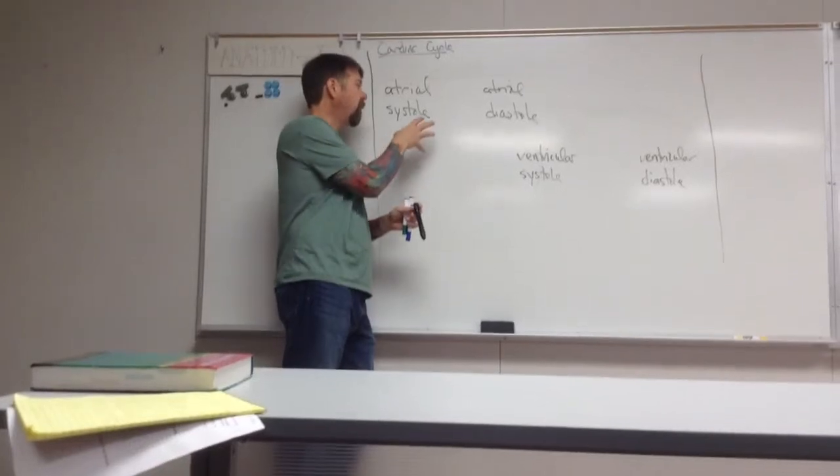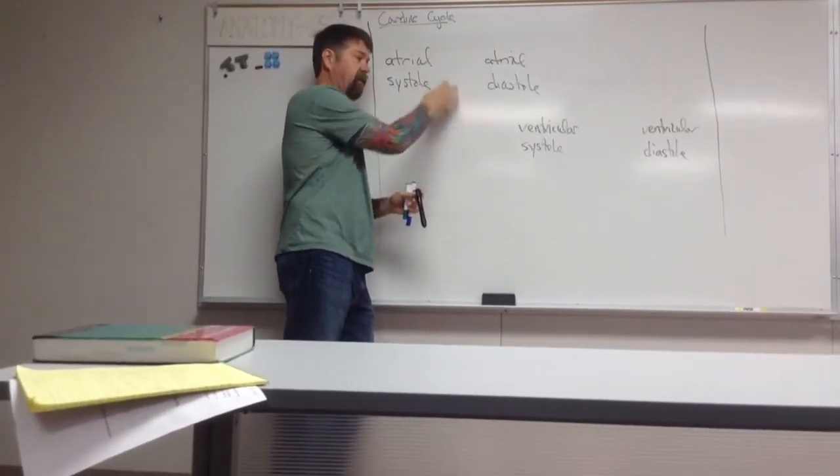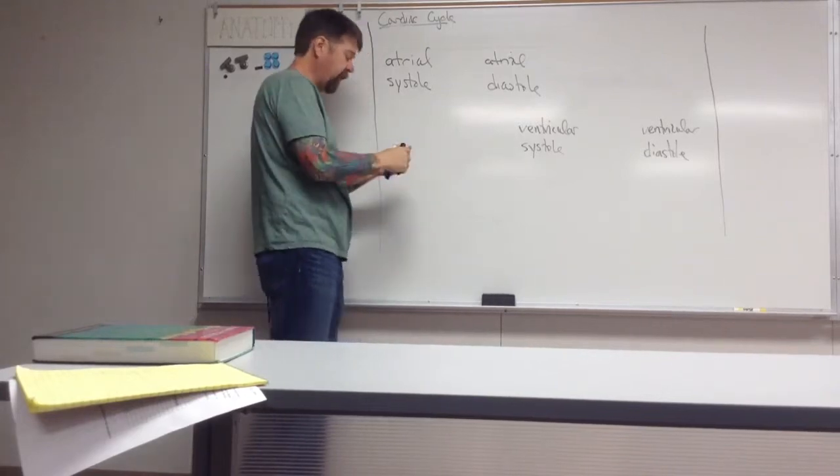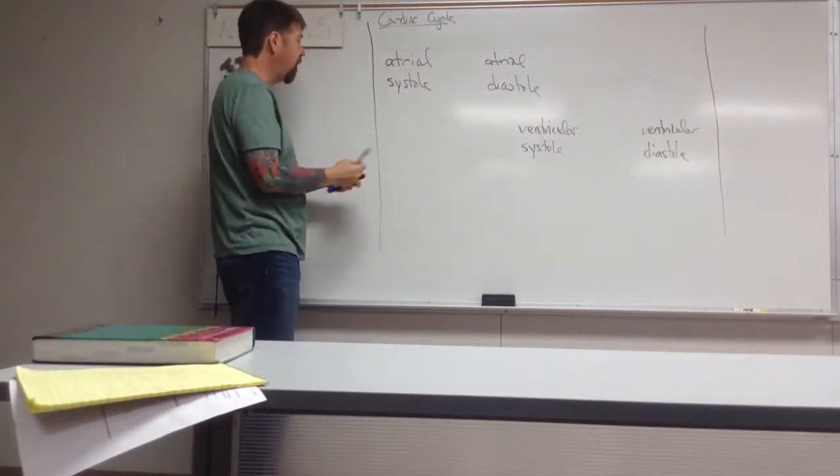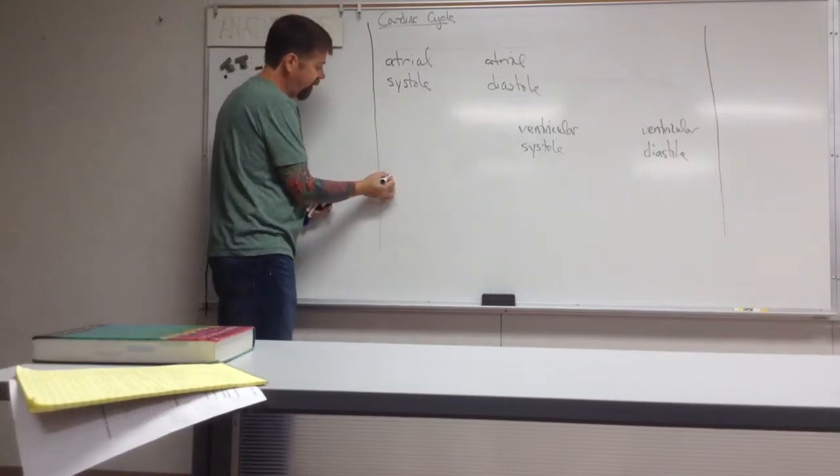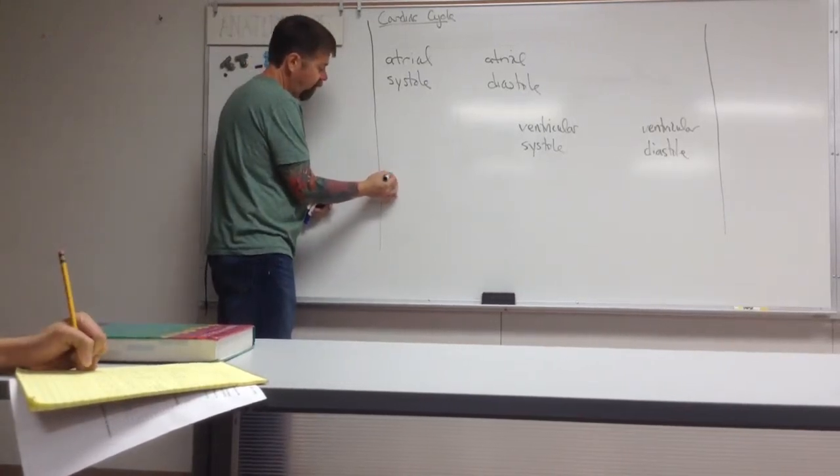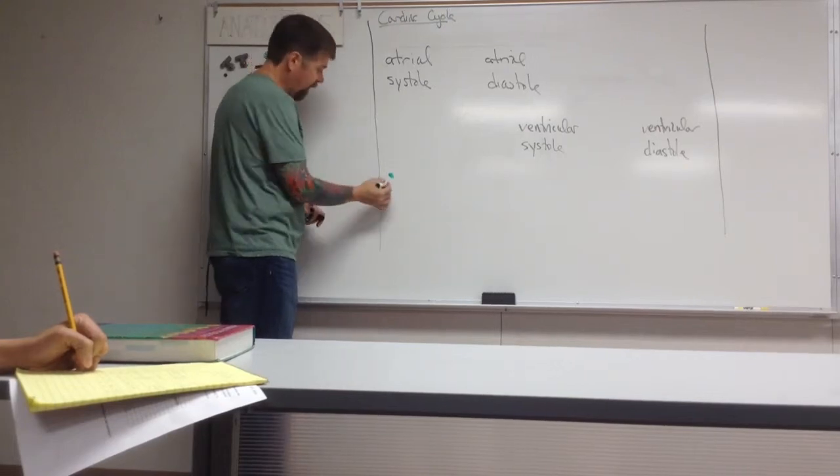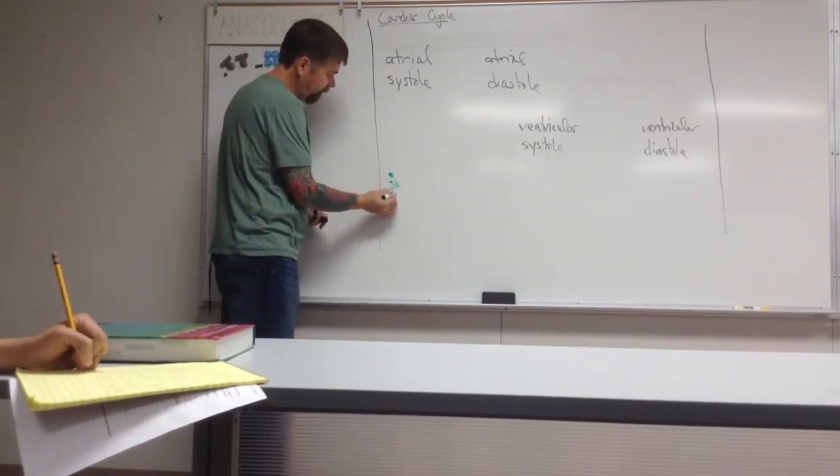So we can see electrical events of the cardiac cycle as well. And we know that those electrical events of the cardiac cycle are going to be started when some of those special auto-rhythmic cells generate action potentials. And that's called the SA node.